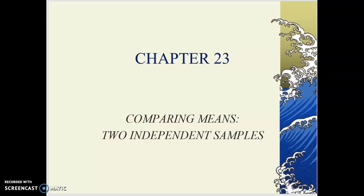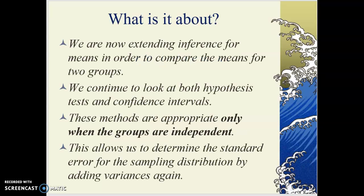Chapter 23 is about comparing means from two separate independent samples. In Chapter 22, we looked at just mean values and hypothesizing about what the means of distributions would be. Now we're comparing two means. We're going to look at hypothesis testing and confidence intervals. Keep in mind that these methods are only appropriate when the groups are independent — we have to know that the groups are independent.